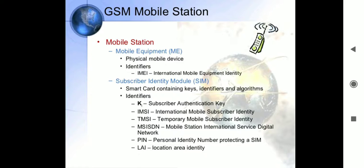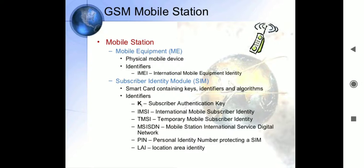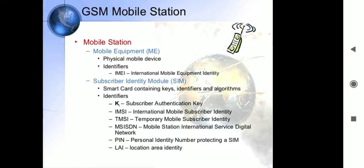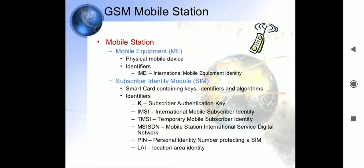GSM is also the name of a standardization group established in 1982 to create a common European mobile standard, formulating specifications for a European mobile cellular radio system operating at 900 to 930 megahertz. Regarding the evolution of GSM standards: in 1990, phase one of the GSM specification was completed, including basic voice and data communication cellular services, and work began to adopt the GSM specification for the 1800 megahertz frequency band.